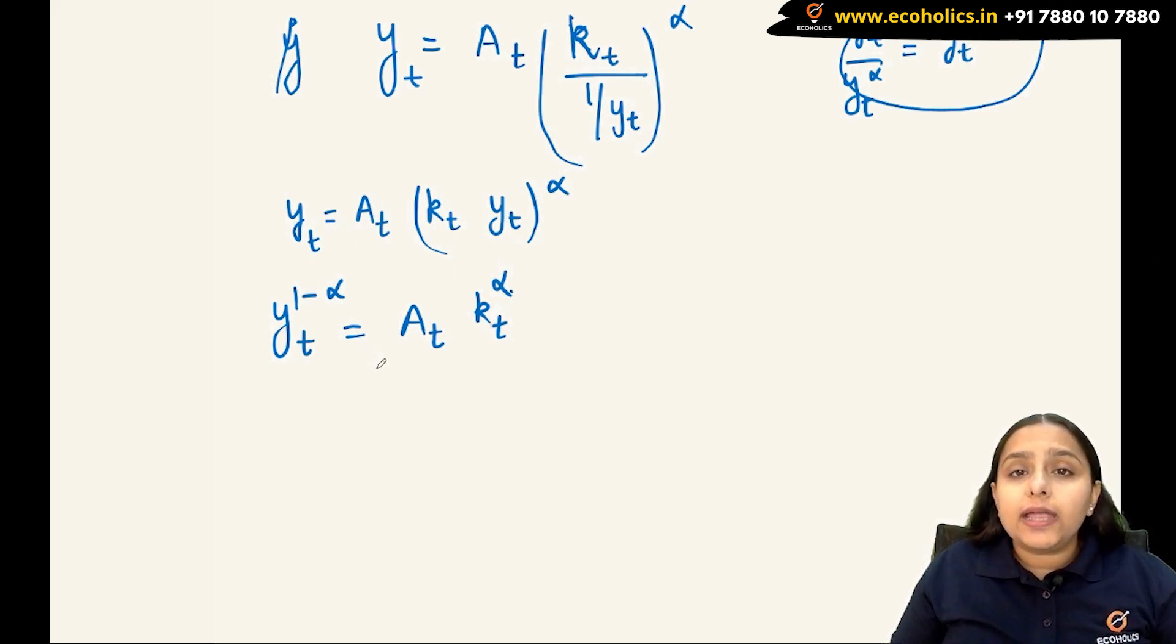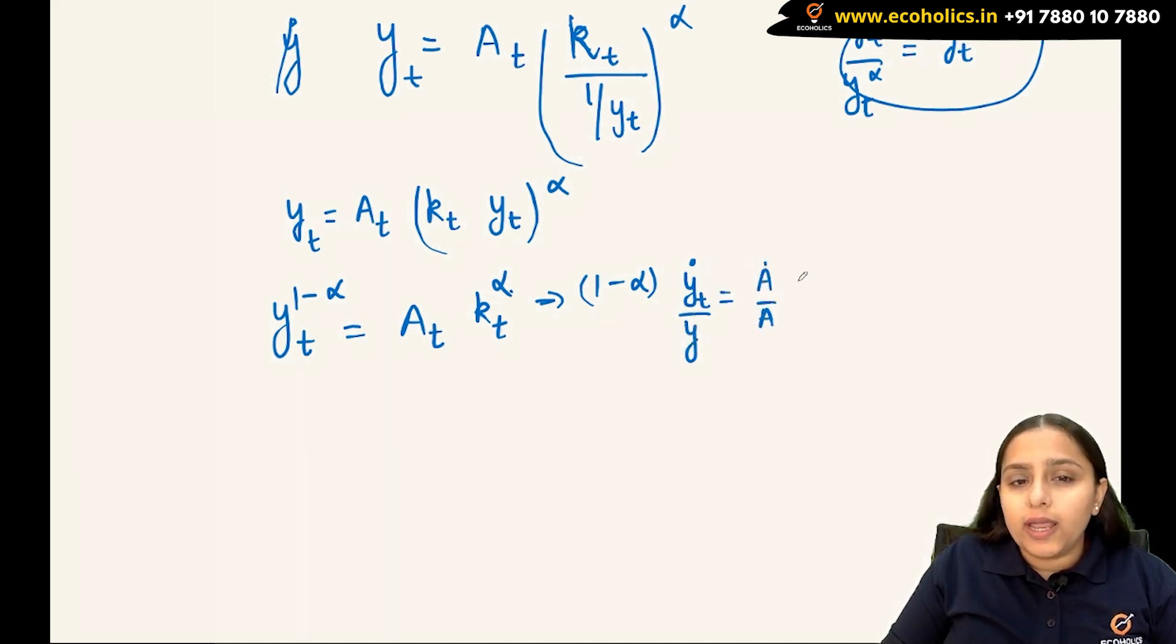The next step is to find the rate of change to get my growth rate. If I take the derivative, it will be (1-α)(ẏ/y) = ȧ/a + α(k̇/k).